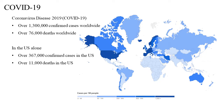COVID-19, or Coronavirus Disease 2019, has taken over the world. It has shut down schools, businesses, and entire governments. Over 1.3 million confirmed cases along with over 76,000 deaths have been reported worldwide. In the U.S. alone, over 367,000 confirmed cases along with over 11,000 deaths have been reported.